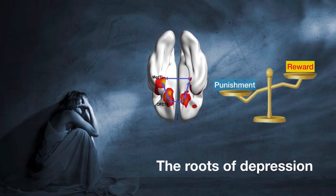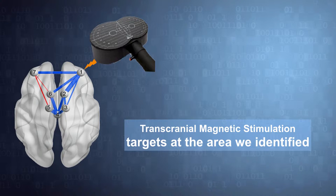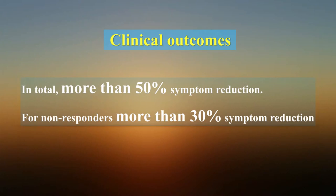Depressed individuals are too sensitive to punishment, much less sensitive to reward. By knowing that, we can target the area of emotion. We can rebalance reward and punishment using transcranial magnetic stimulation for the treatment of depression.